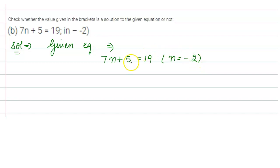So we need to check whether n equals minus 2 is the solution of this equation. Just put the value of n equals minus 2 in this equation. If left hand side and right hand side becomes equal, then this is the solution of the given equation.